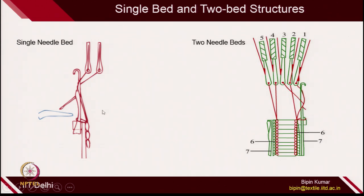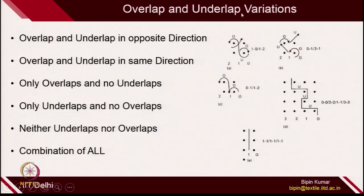You can go for 1 set of bed or 2 sets of bed. But if you are creating single bar structure, you don't need 2 beds, because only 1 guide is available with 1 particular needle. Single guide bar structures can be created with a tricot machine having 1 set of needle, 1 set of sinker, and 1 set of guides. Then you can go for overlap and underlap variations.